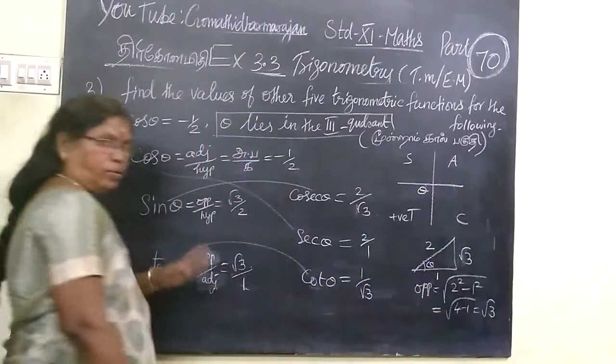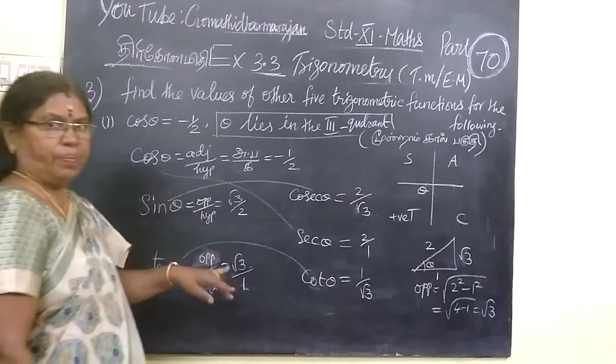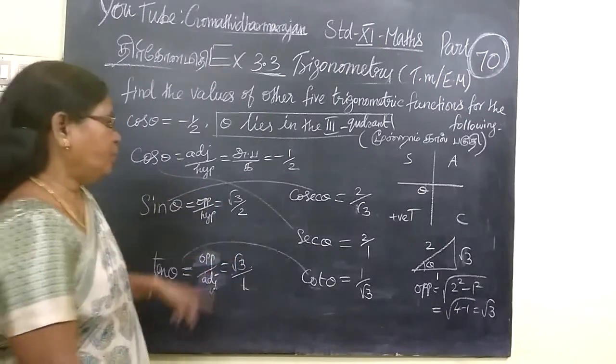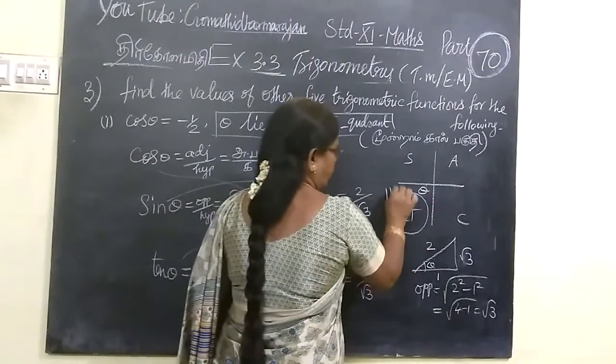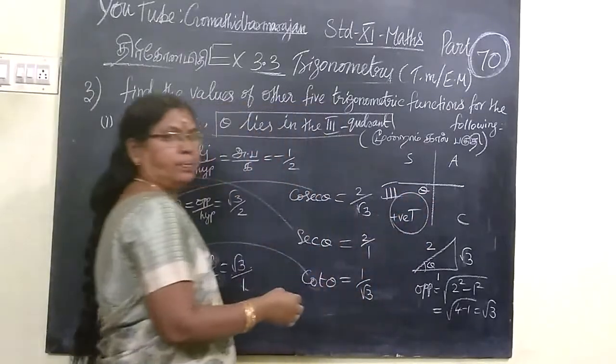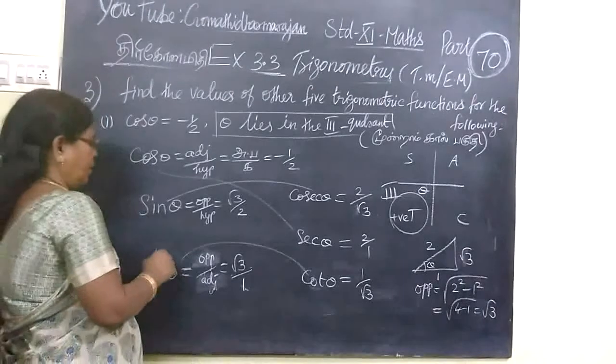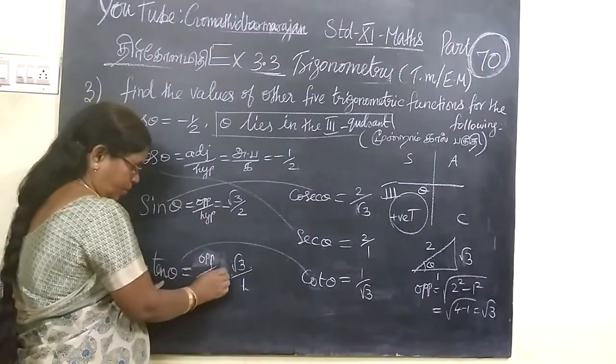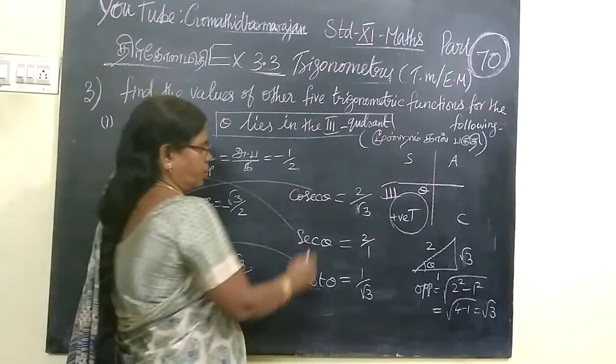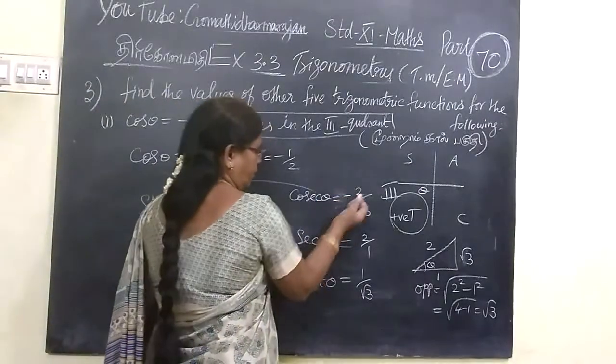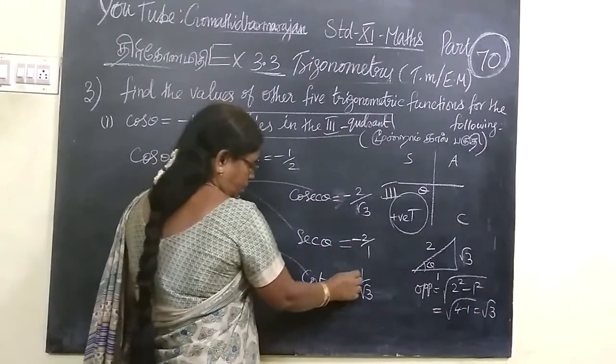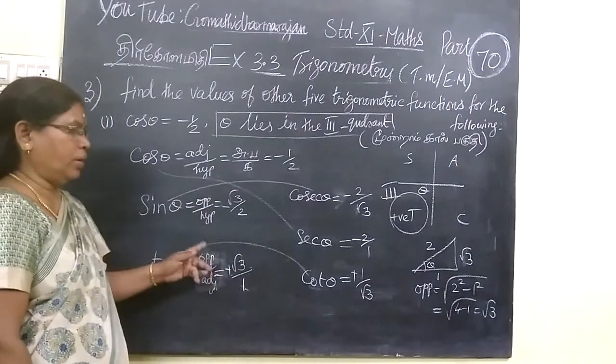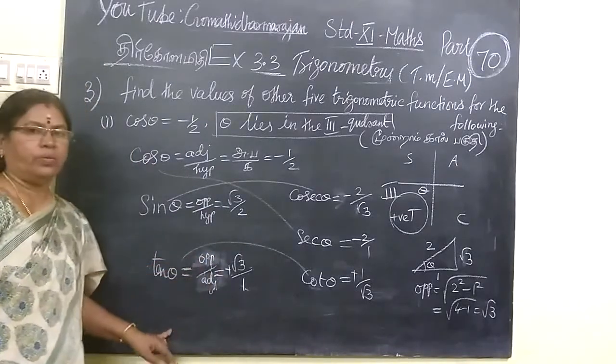Now the problem is not over. You know the problem is we are talking about third quadrant. So third quadrant is that except tan, all others are negative. So this is automatically minus. Except tan, this is plus, but the others are negative. So sin minus, cos minus, sec minus. Except tan and cot, all the ratios are negative.